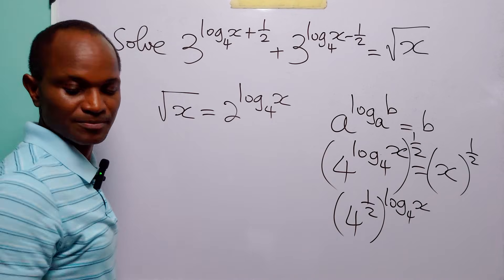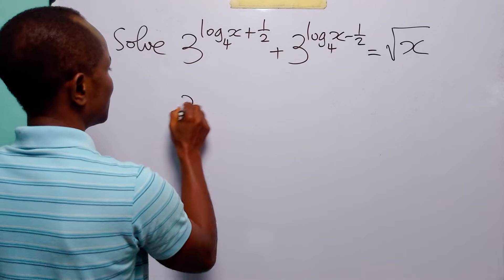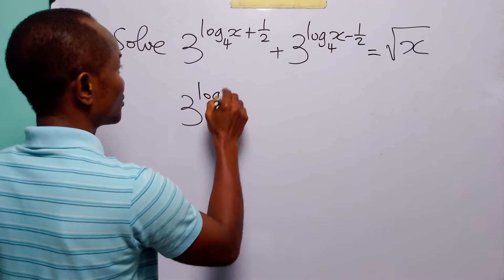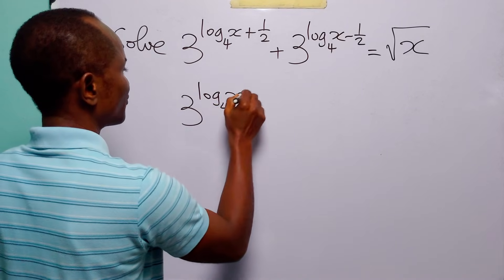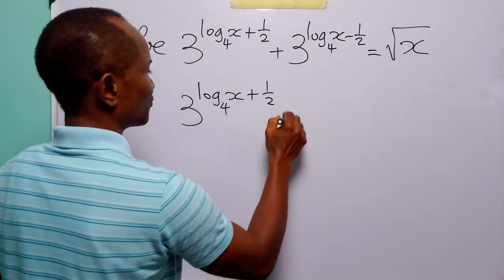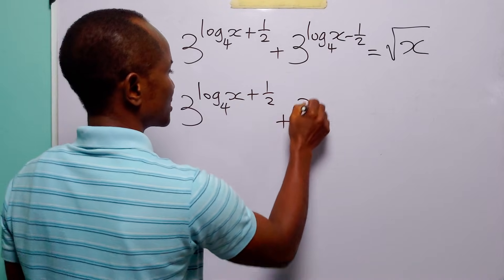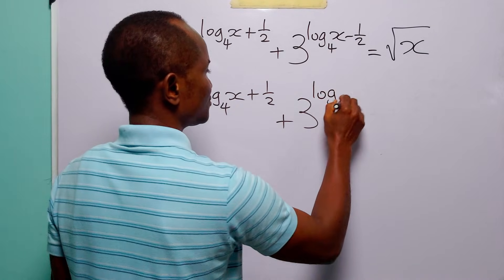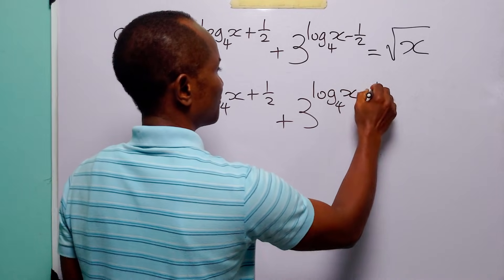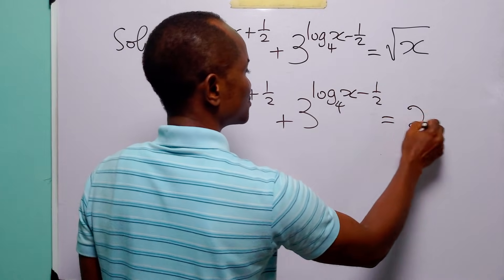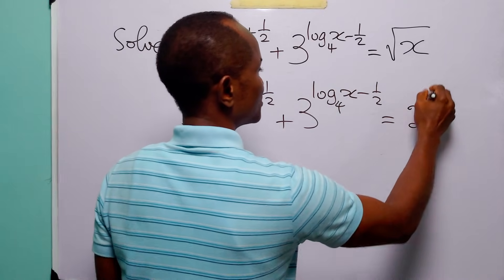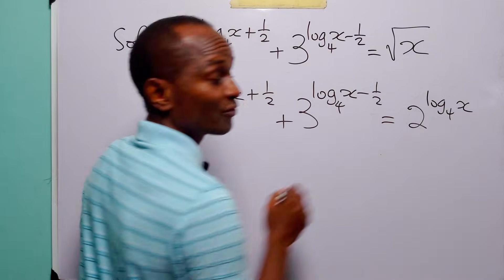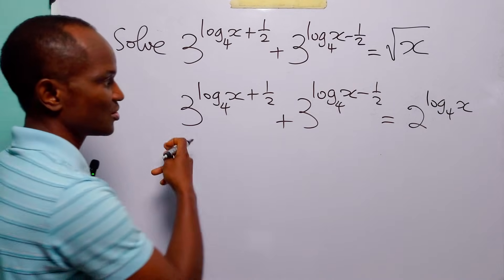So this equation with this change is now going to be: 3 to the power (log base 4 of x plus half) plus 3 to the power (log base 4 of x minus half) is equal to 2 to the power log base 4 of x.